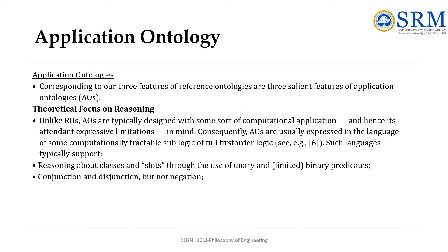The key features of application ontologies: first, they are built with computational efficiency in mind. While reference ontologies use full first-order logic, application ontologies use simplified logic to make reasoning faster and more effective. Unlike reference ontologies, application ontologies rely on unary and binary predicates — that is, statements about classes and relationships between objects — and use conjunction and disjunction, but they often avoid negation to keep reasoning simpler.